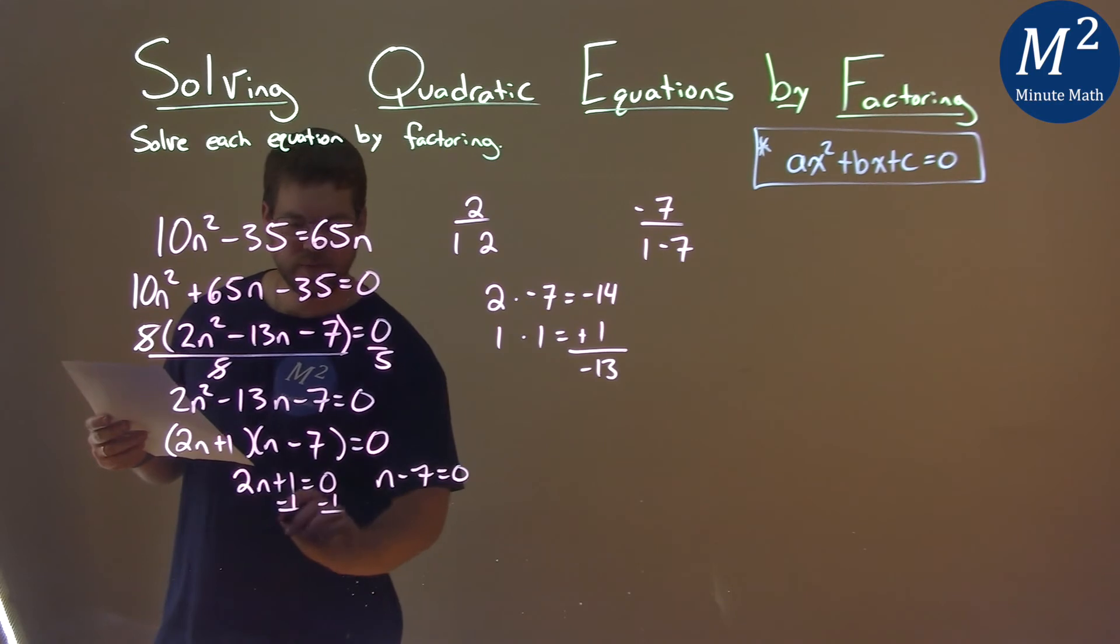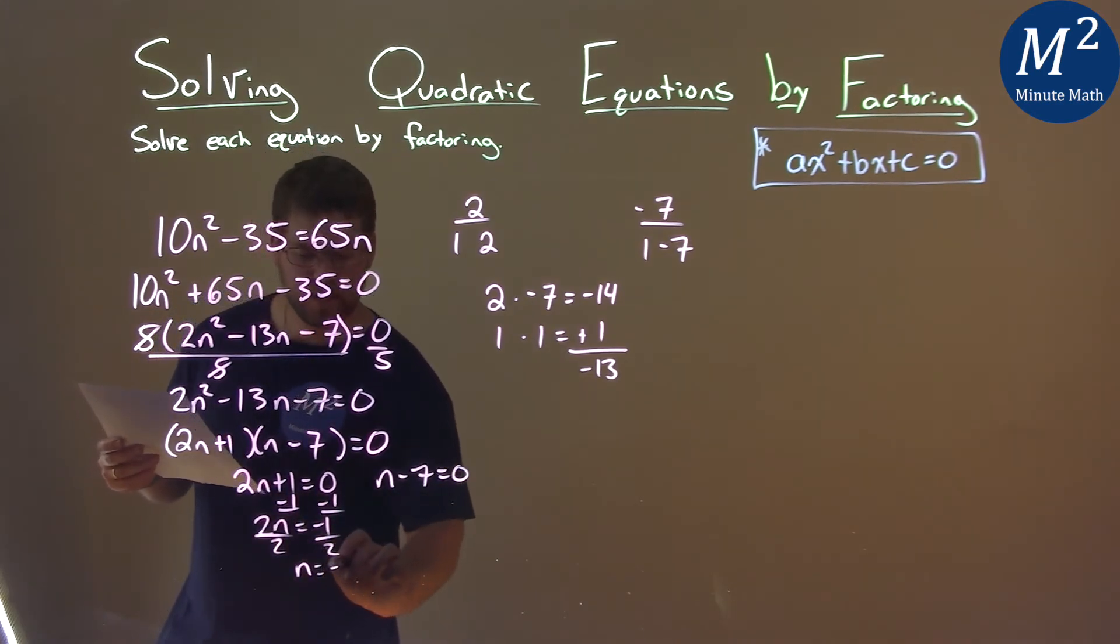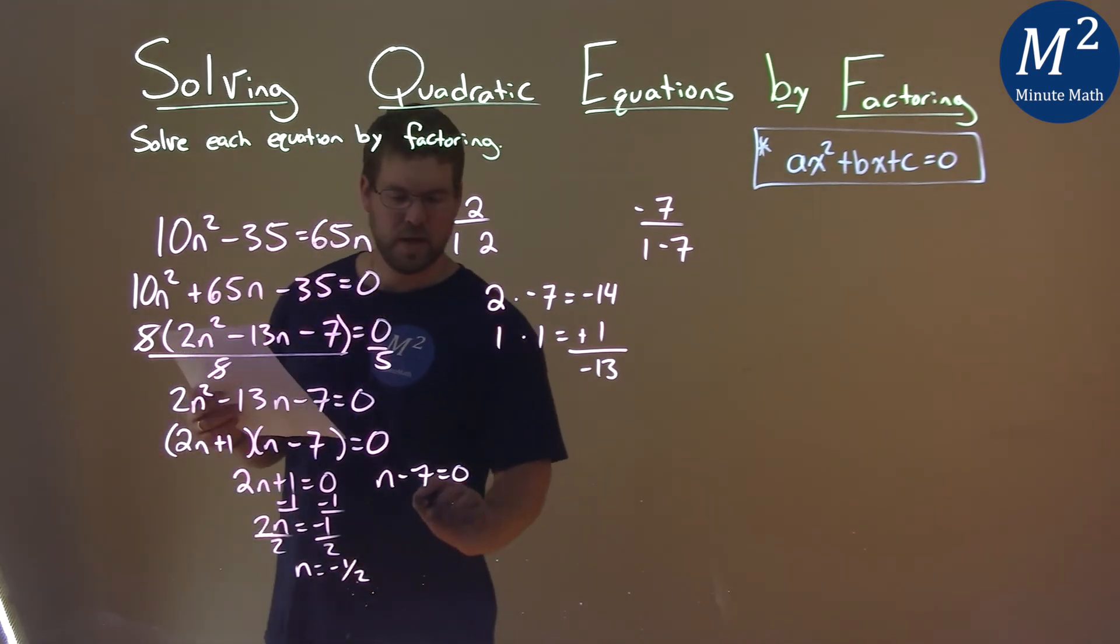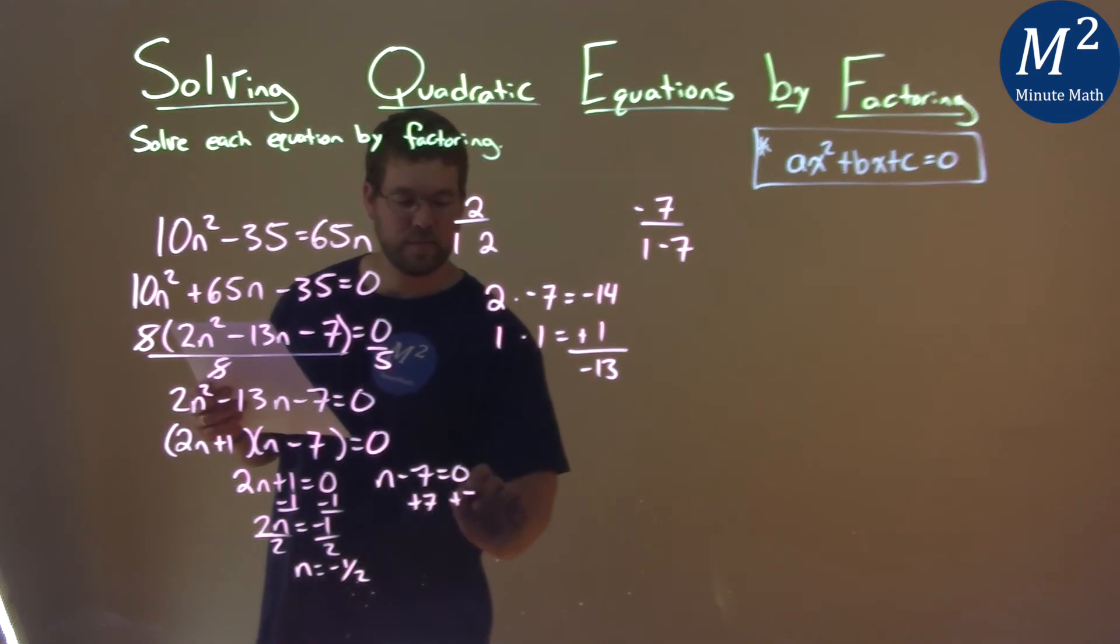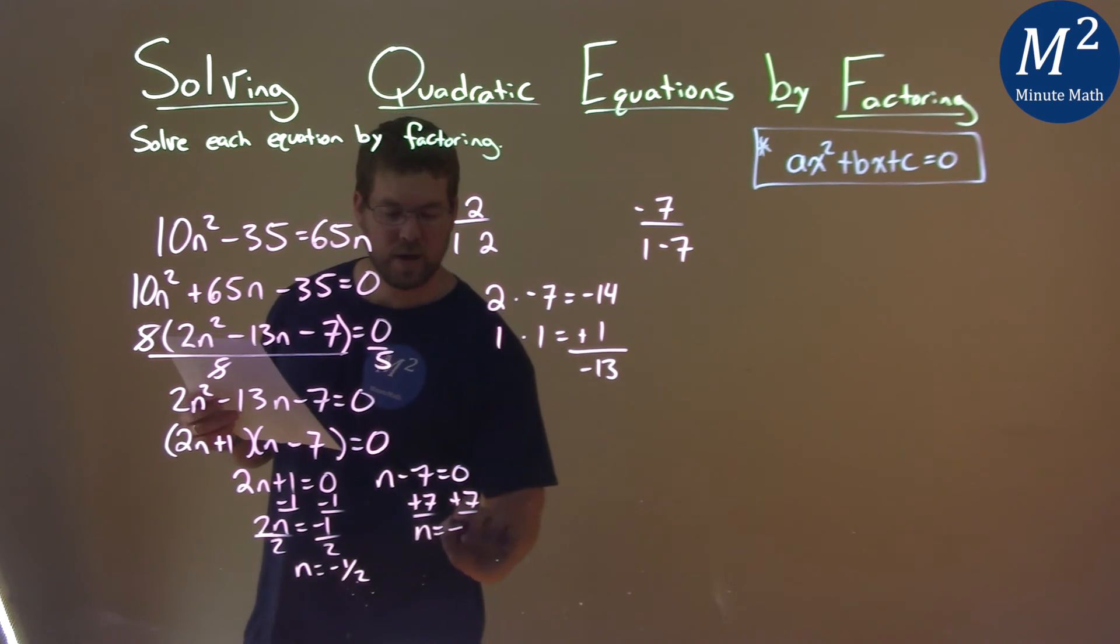Subtract 1 from both sides, and 2n equals negative 1. Divide both sides by 2, and n equals negative 1 half. Add 7 to both sides, and n equals positive 7.